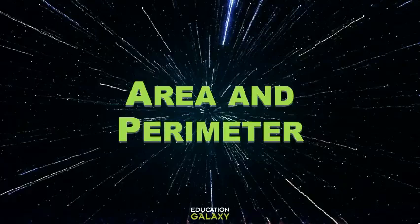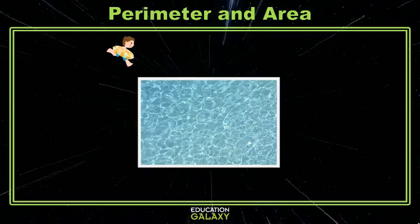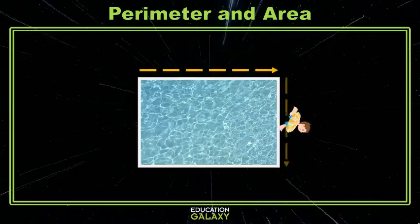Today we'll be talking about area and perimeter of rectangles. You might remember that perimeter is the distance around an object.